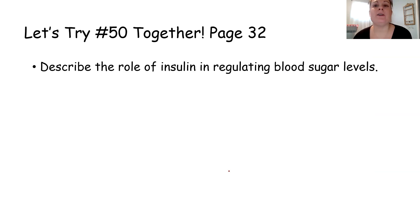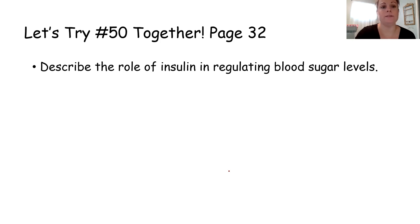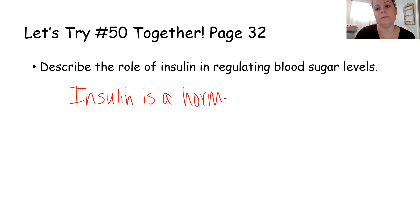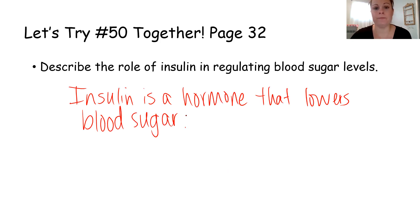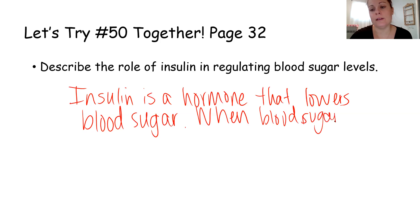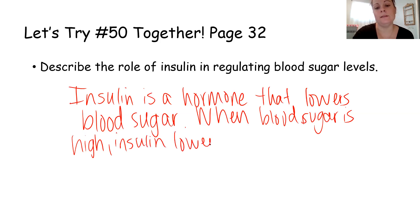Let's try number 50 together on page 32, which talks about the feedback mechanism of maintaining blood glucose levels. Number 50 asks to describe the role of insulin in regulating blood sugar. I would say: insulin is a hormone that lowers blood sugar. To address its role in regulating blood sugar, I'd add: when blood sugar is high, insulin lowers it.